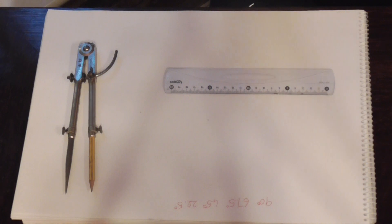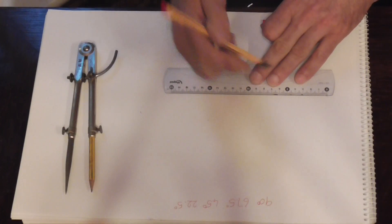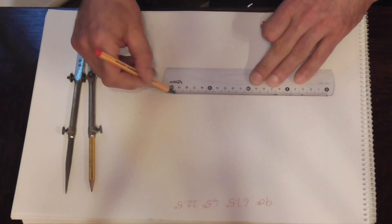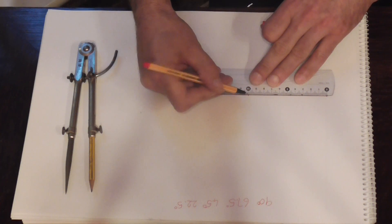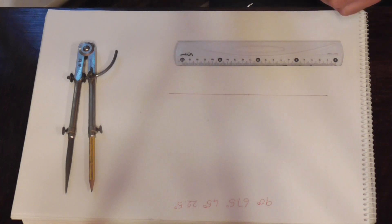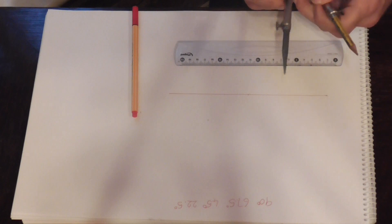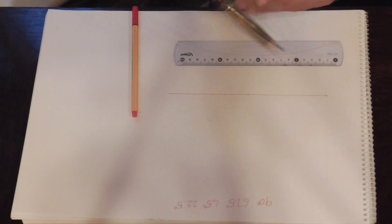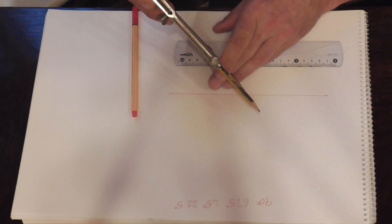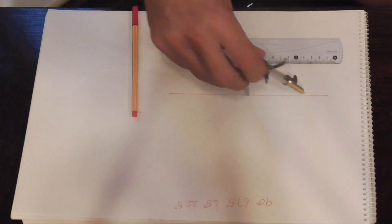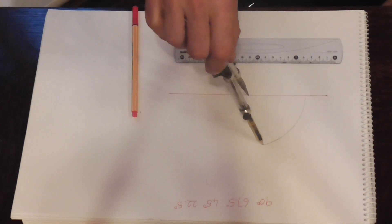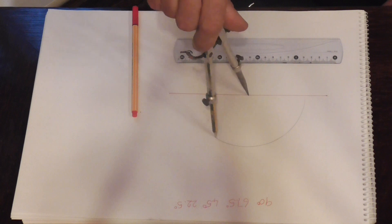So let's get started. First of all, we need to draw ourselves in the baseline. Like that. We need to draw ourselves a semicircle. Like that.